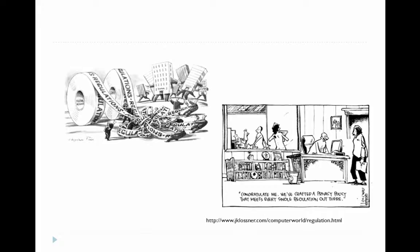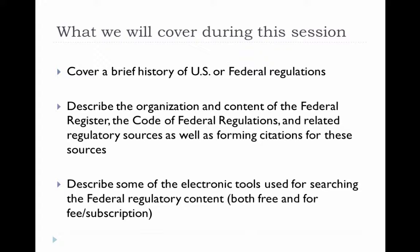As librarians and information professionals, it is important to know where and how to effectively find regulations and get them to our users who need them. For federal regulations, we start with the Federal Register and the Code of Federal Regulations — these are the two major sources. We will cover a brief history of U.S. federal regulations, and if you want more information, the Office of the Federal Register has a lot of great information on their website. We will spend the majority of our time describing the Federal Register, the Code of Federal Regulations, related regulatory sources, how to form citations, and tools to search their contents.